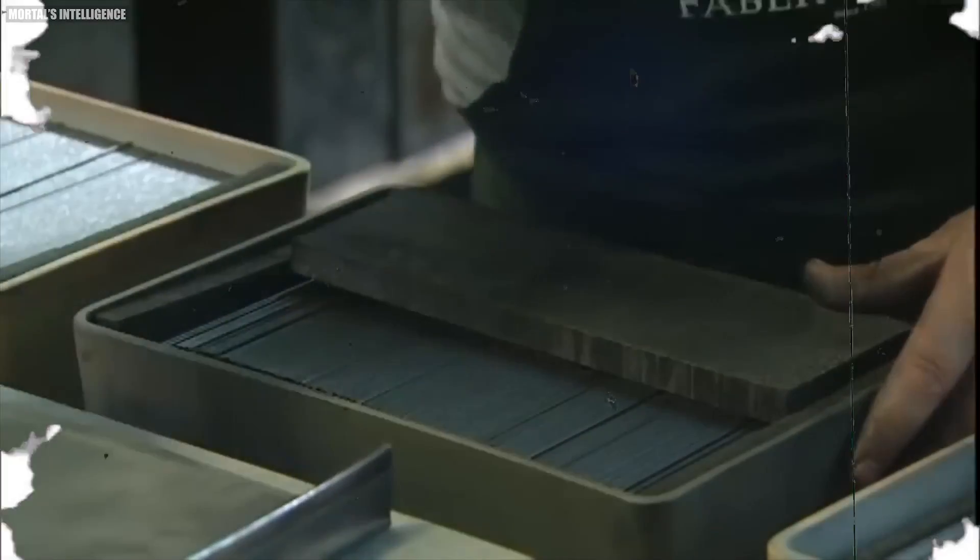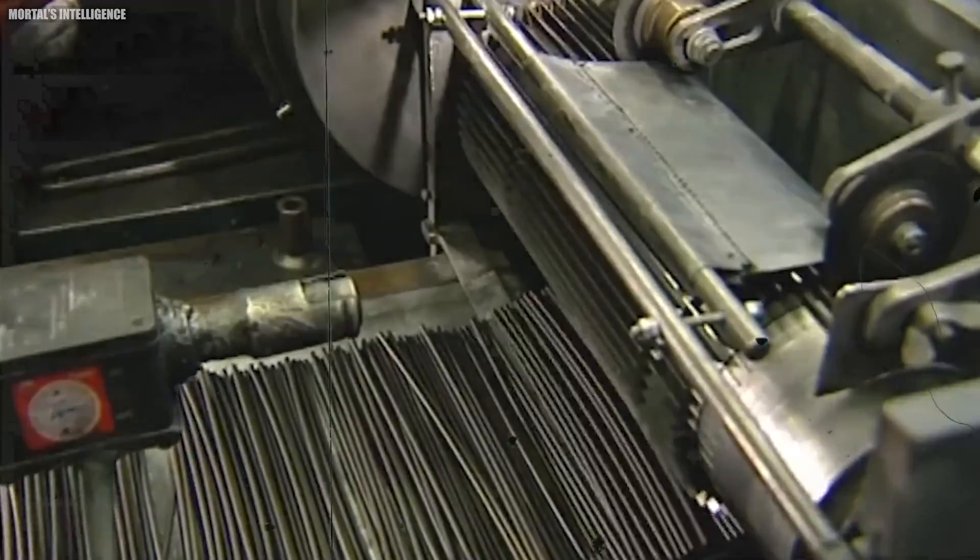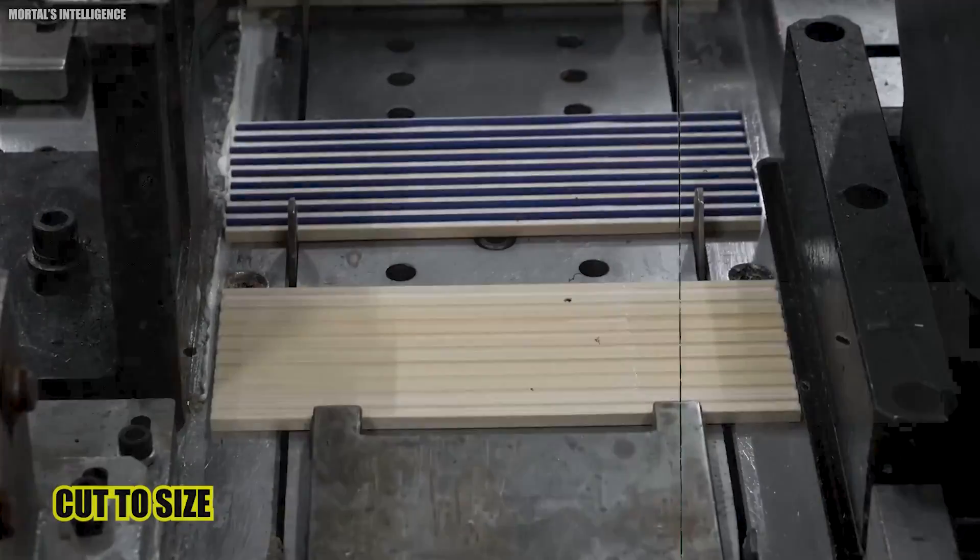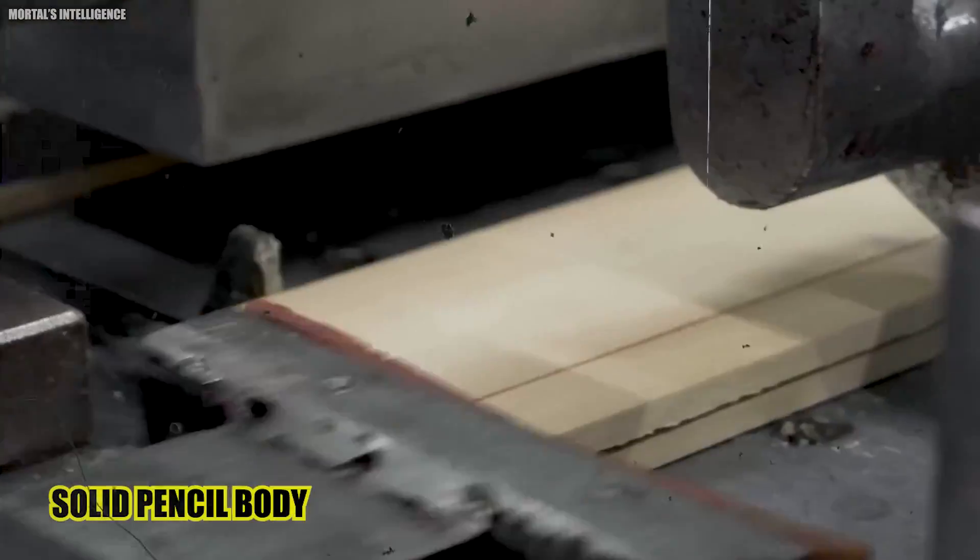Once the raw materials are gathered, the manufacturing process begins. The graphite and clay mixture is extruded into thin rods, which are then cut to size and inserted into the wooden casings. The casings are then glued together, creating a solid pencil body.